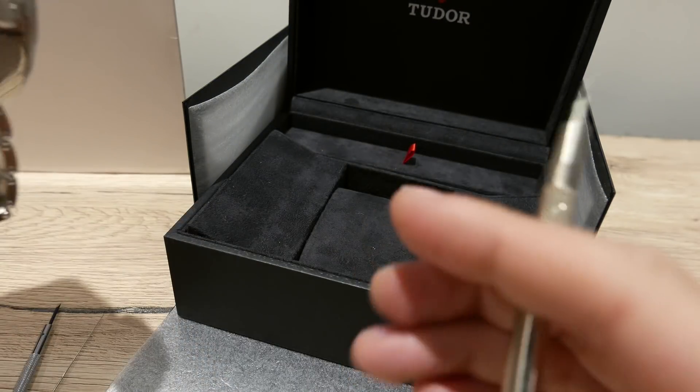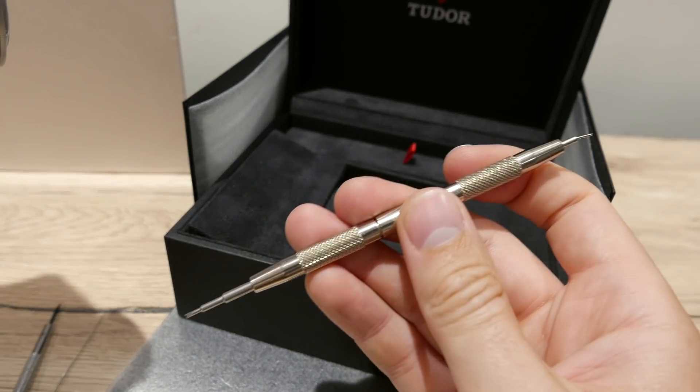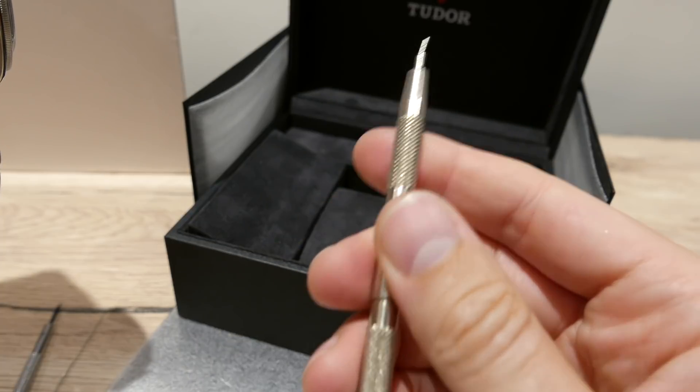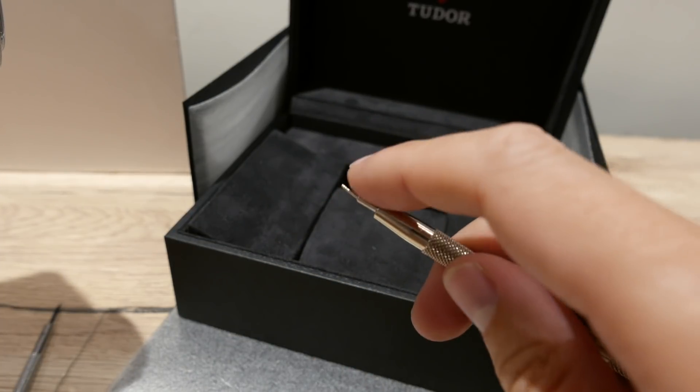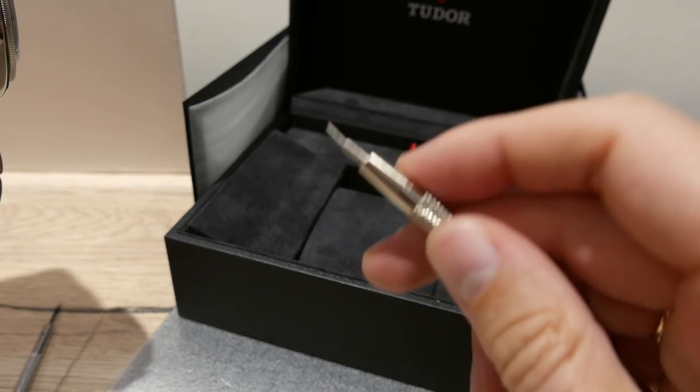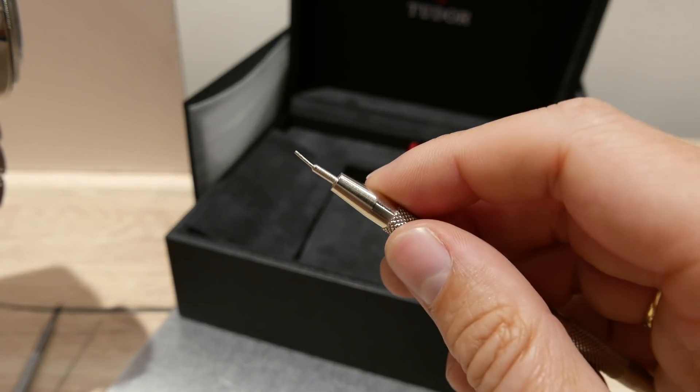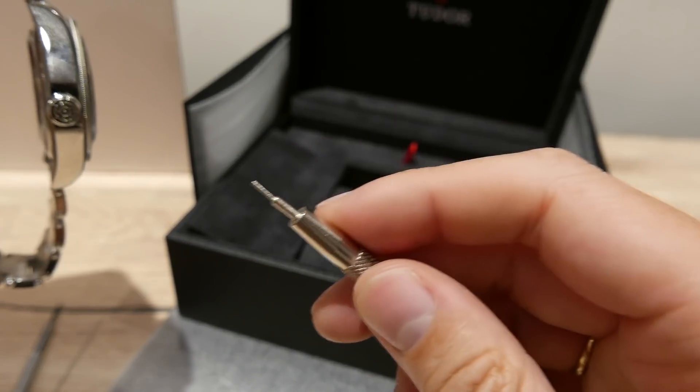And most people would have something like a tool like this, hopefully, if you're into watches. This is a version tool that the actual pinpoint is actually bent. But this is normally fine for removing spring bars and things like that. However, in this case, that's actually too big.